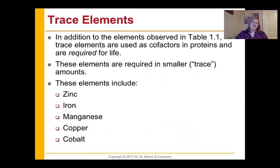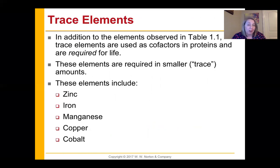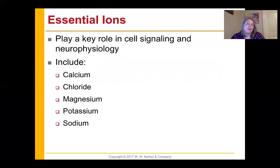In addition to the common elements in that table, we have trace elements — we don't see very much of them inside the body, but they're super important as cofactors in proteins, and if you don't get them you don't survive. Those include zinc, iron, manganese, copper, and cobalt. Iron in hemoglobin is a good example — you don't need that much, but it's essential for life. Our essential ions — calcium, chlorine, magnesium, potassium, sodium — are also super important in cell signaling and neurophysiology.